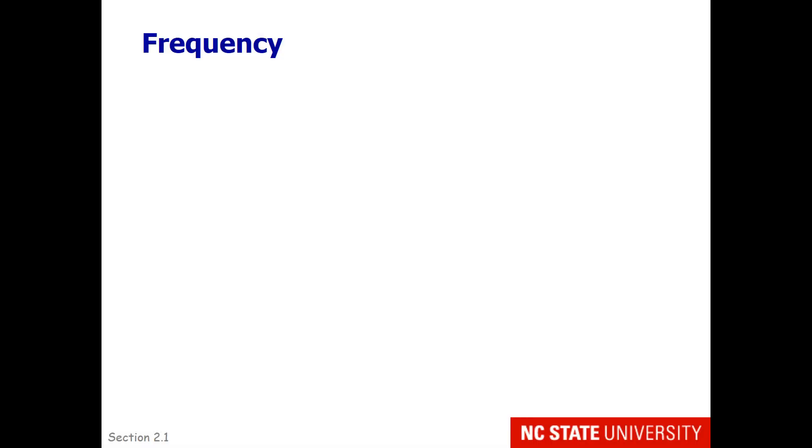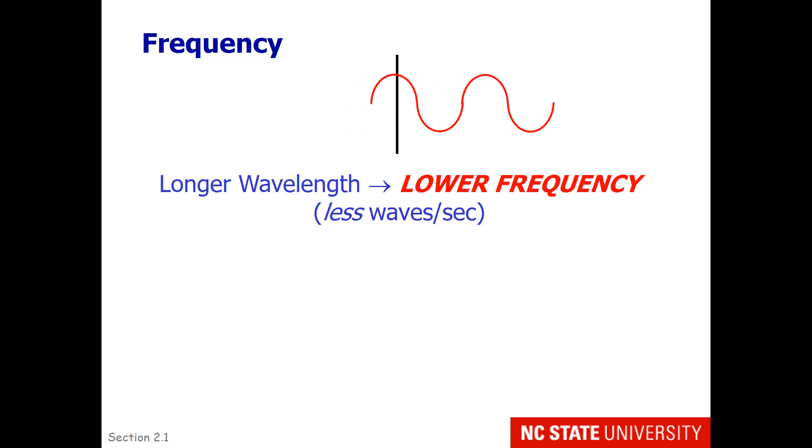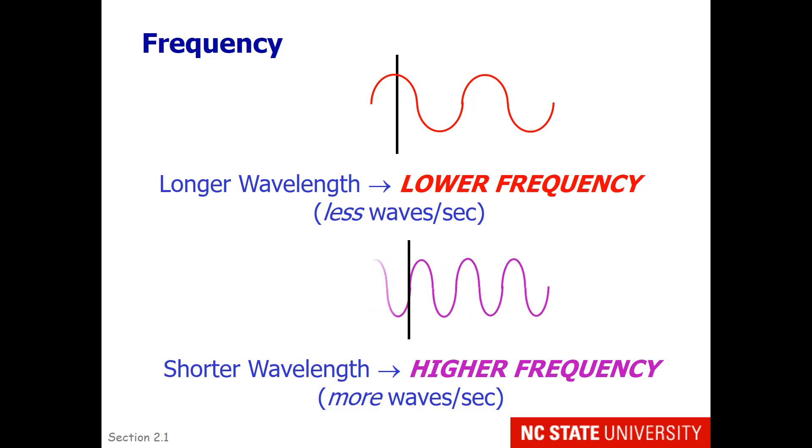So this slide is just to remind you that when you have a longer wavelength, a greater distance between the peaks, you will have less waves per second pass a particular point and a lower frequency. If you have a shorter wavelength or higher frequency, you will have more peaks per second pass a particular plane and therefore a higher frequency.